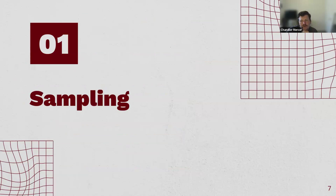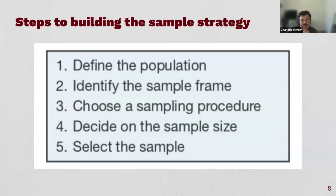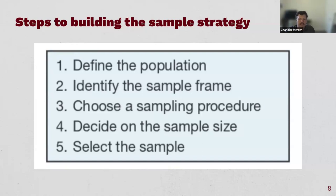There are four to five big steps in building the sample strategy. Step one: define the population. Step two: identify the sample frame. Step three: choose a sampling procedure. Step four: decide on the sample size. Step five: select the sample — which is basically execution. We'll follow these steps as an outline.